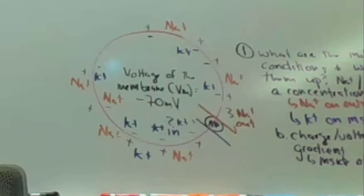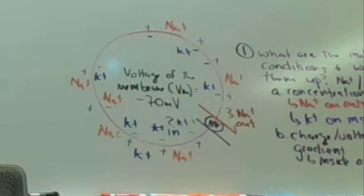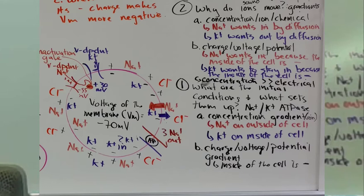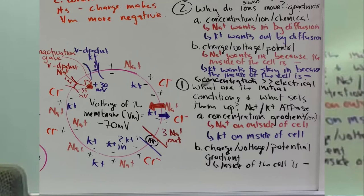The voltage of the membrane is abbreviated Vm. It's usually around negative 70 millivolts (mV). All cells set up this voltage so that it lets sodium back in if it takes glucose with it. But certain cells like neurons, muscle, and the heart change this voltage — because that's the fastest way the human body can signal. It's not as fast as electricity, but it's still pretty fast.